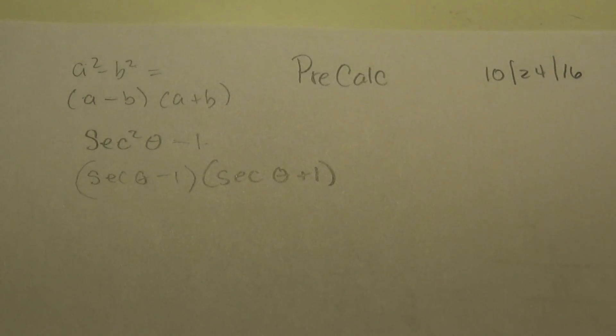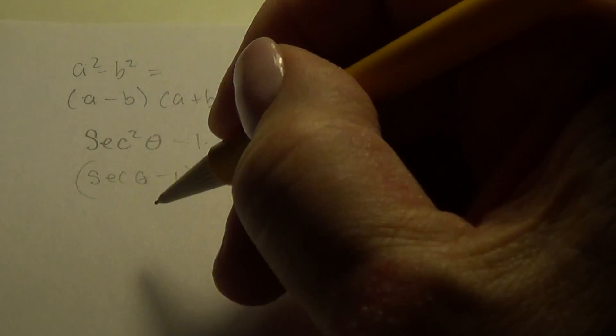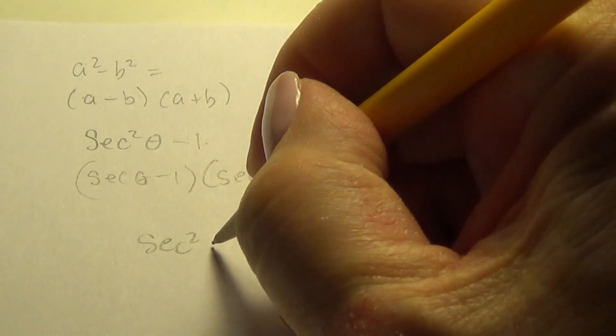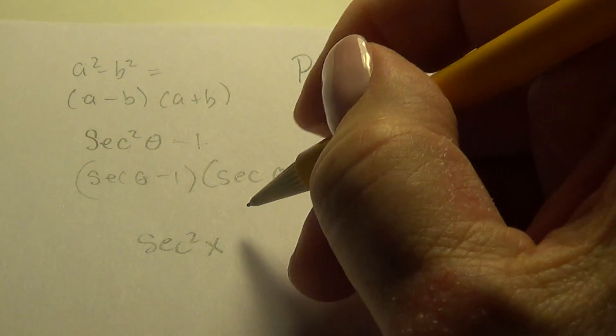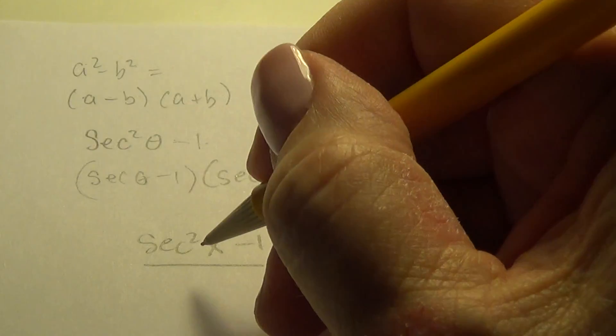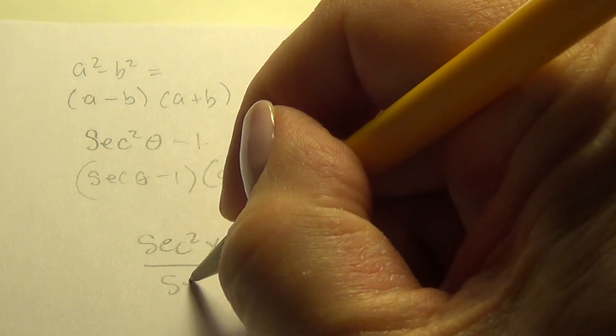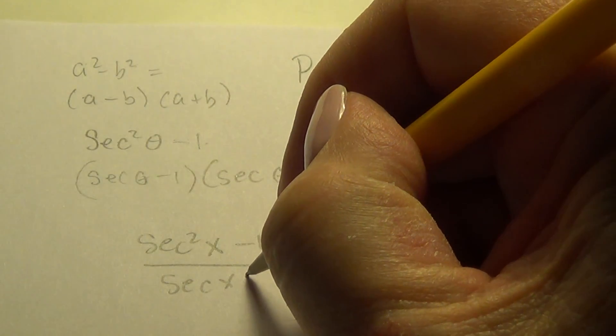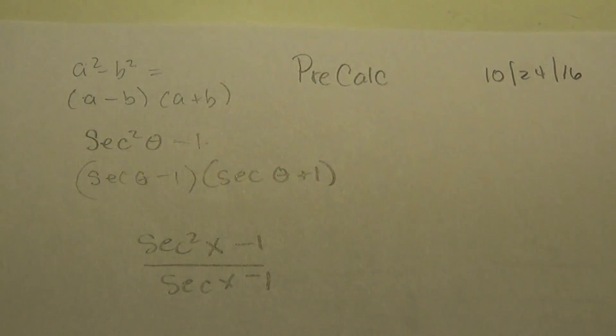So with that, we're going to look at a problem where that actually happens. So the problem that I came up with looks like this. Find it here. All right. It is secant squared. I'll put an x in so you can use any old variable. And secant of secant x minus one on the bottom.